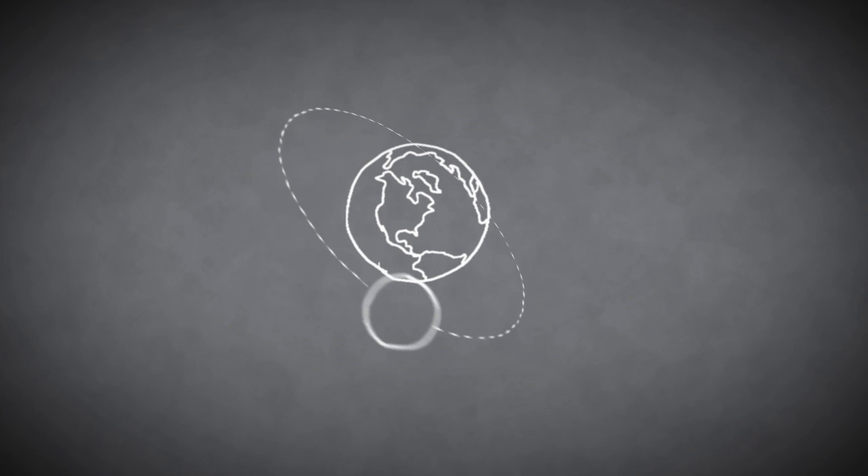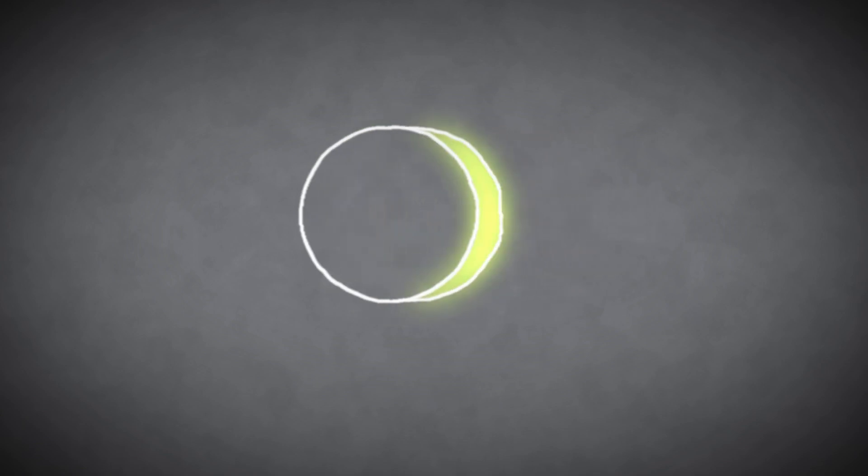Most of the time, the new moon passes either above or below the sun. But roughly every six months, a perfect alignment is possible. The moon can cast its shadow directly onto Earth's surface. Observers in the path of the shadow will see the silhouette of the new moon blocking all or part of the sun's disk from view.